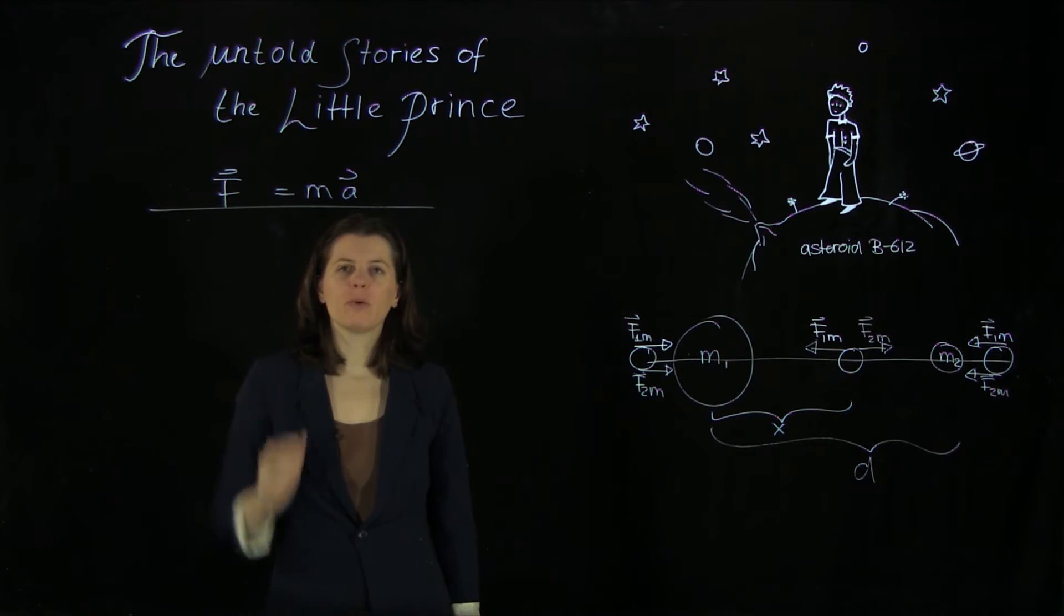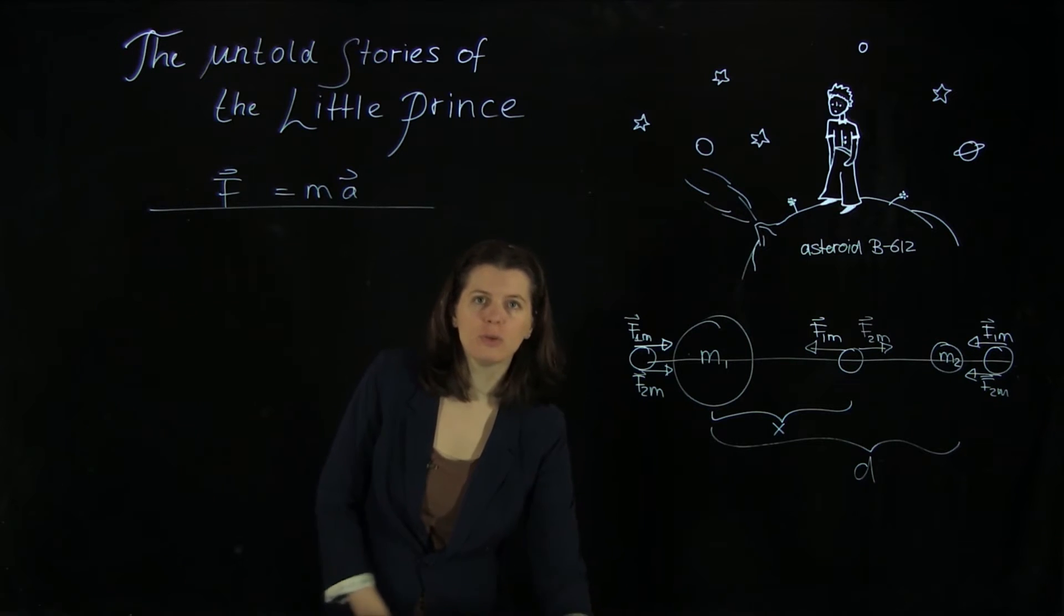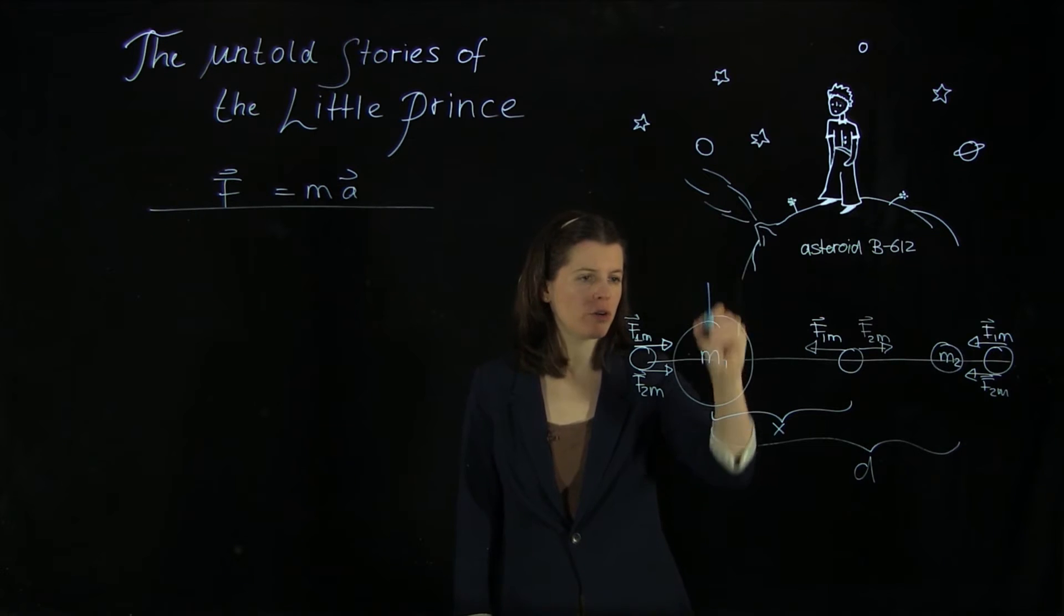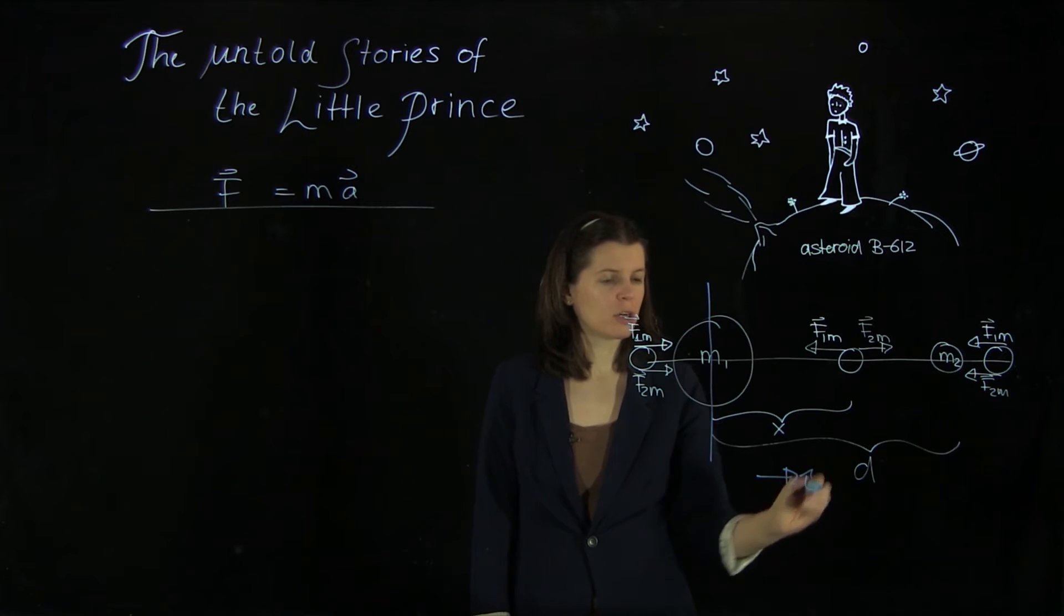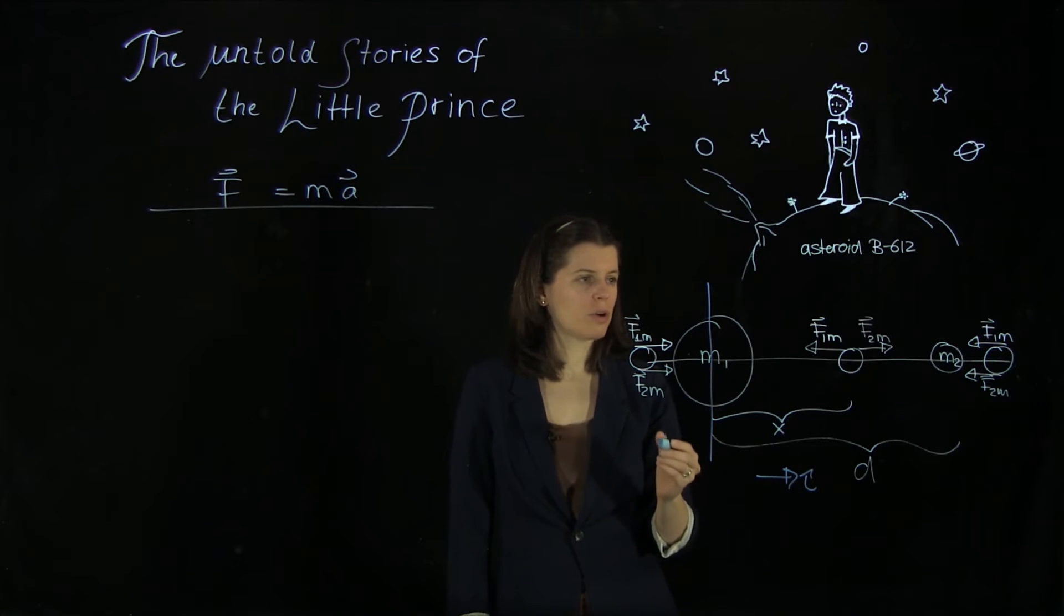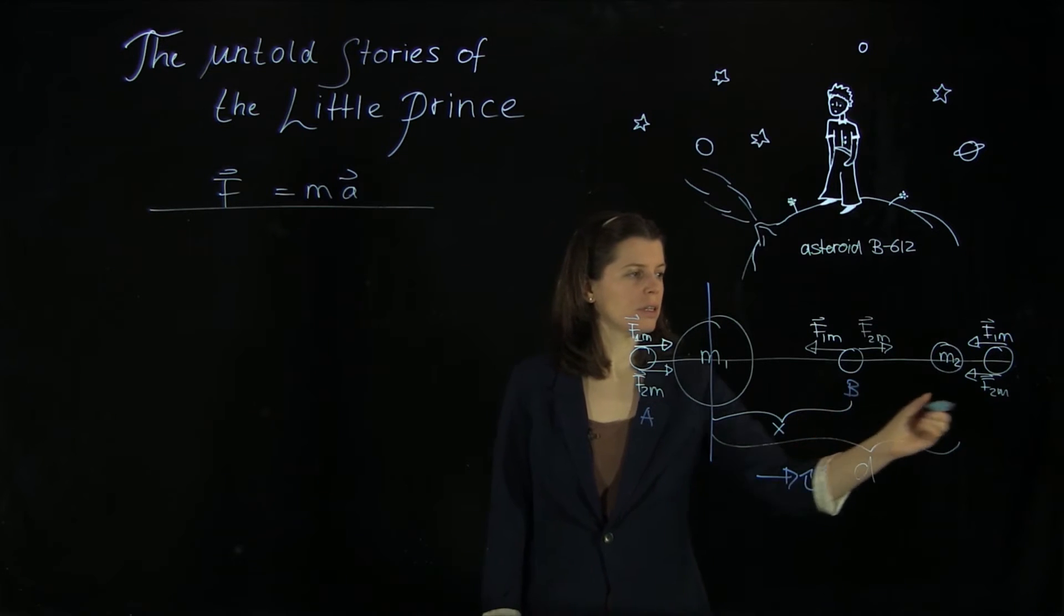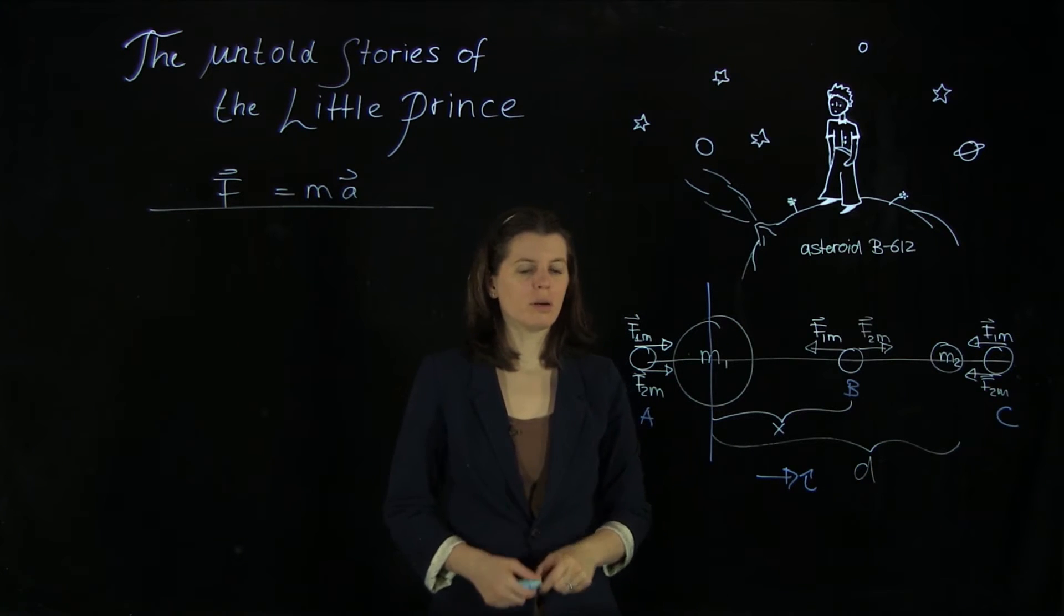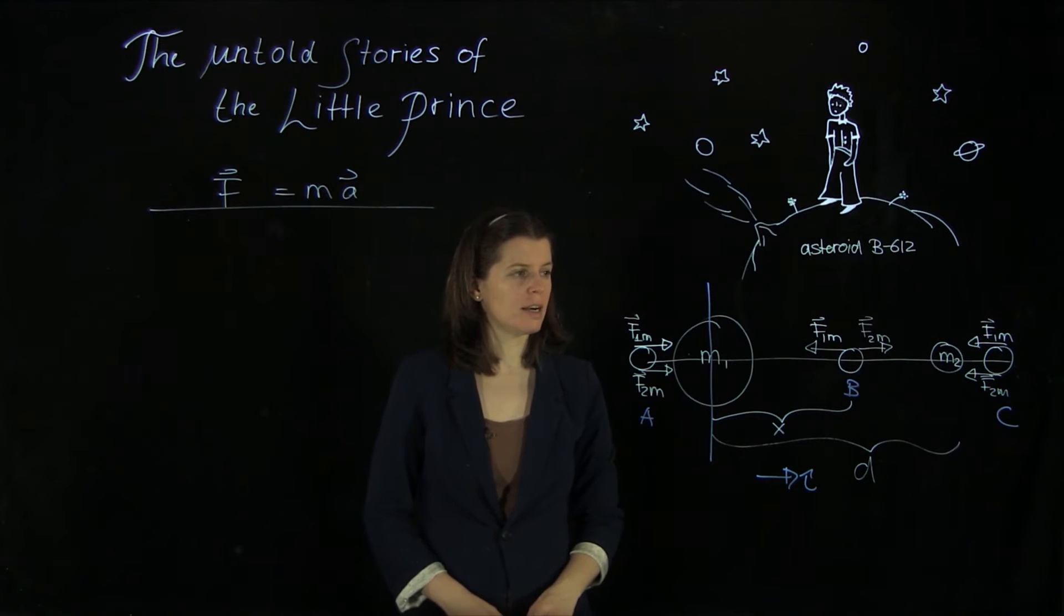Well, before we start with our F equals ma analysis, we actually have to pick a coordinate origin and a unit vector. And so let's place the coordinate origin in here. And let's have i hat go in this direction. And we're going to label this here position a and position b and position c. These are our three options for asteroid placement. And let's look at position b.